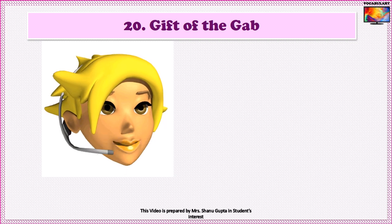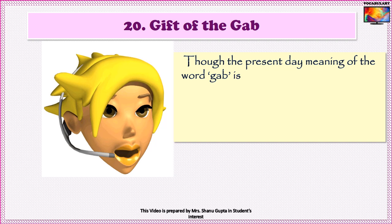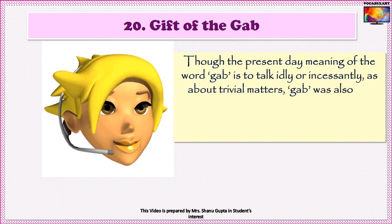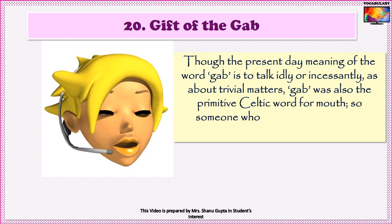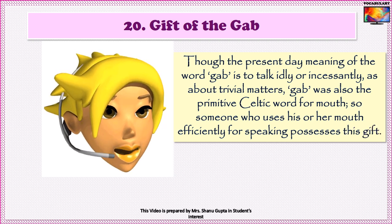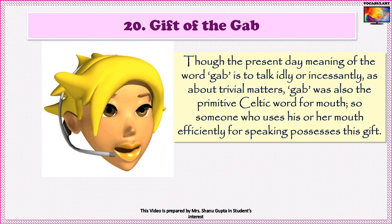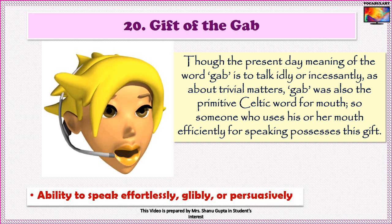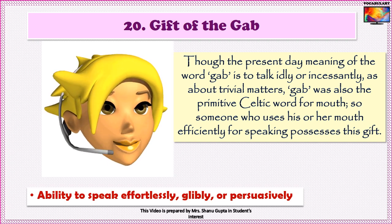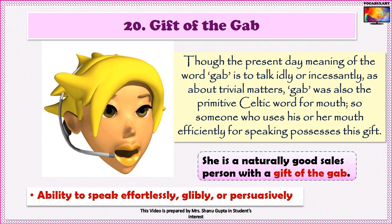Our twentieth idiom is Gift of the gab. Though the present-day meaning of the word 'gab' is to talk idly or incessantly about trivial matters, 'gab' was also the primitive Celtic word for mouth. So someone who uses his or her mouth efficiently for speaking possesses this gift. One who has the gift of the gab has the ability to speak effortlessly, glibly, or persuasively. For example: She is a naturally good salesperson with the gift of the gab.